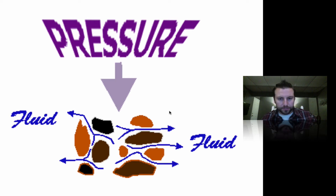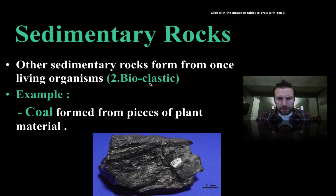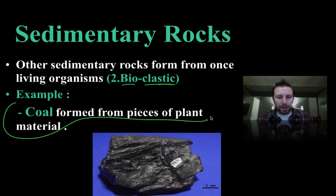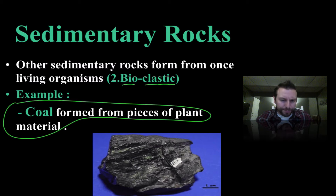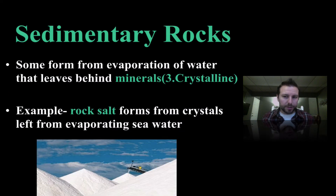Another group of sedimentary rocks that form from living organisms are called bioclastic. So once again it's sediments, but now once-living material. An example of a bioclastic sedimentary rock is coal. This sedimentary rock is made of plant remains that accumulated and underwent pressure to form coal.